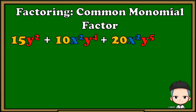Another one, my last example: 15y squared plus 10x squared y raised to 4 plus 20x squared y raised to 5. Get the GCF of the numerical coefficients and the variables. Our common monomial factor is 5y squared. Divide each term by the common monomial factor.